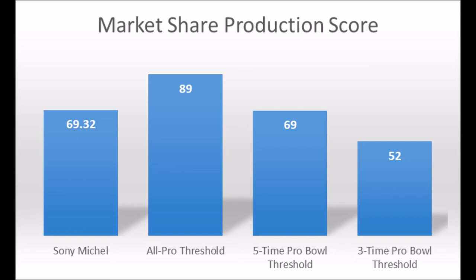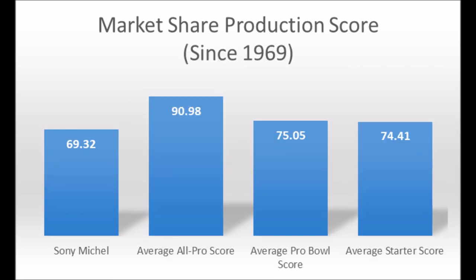He at least hit the five-time pro bowl threshold, where that is basically the bottom-end threshold for five-time pro bowlers — and that's still a very good place to be. That's basically the second tier of high-quality outcomes. He also hit the three-time pro bowl area of 52 or higher. So when it comes to Sonny Michel, he has above-average production, and there's really nothing to be too concerned about in terms of his overall data. When you look at the averages at the position, Sonny Michel doesn't quite look like a multiple all-pro type running back, but he does hit at least closer to the averages of a pro bowl player and the averages of a long-term starter.